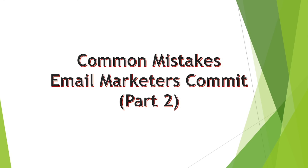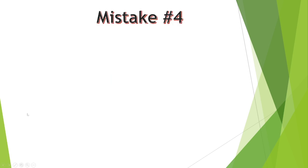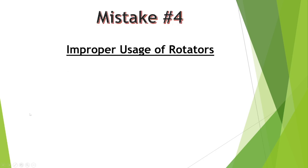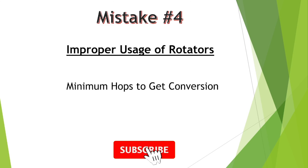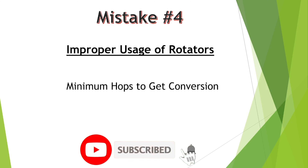As you guys can see over here, this is part 2 of the common mistakes that email marketers commit. Continuing from part 1, mistake number 4 that I observe is the improper usage of rotators. Now when it comes to getting sales via email marketing, there is this thing called the minimum hops in order to see conversions.